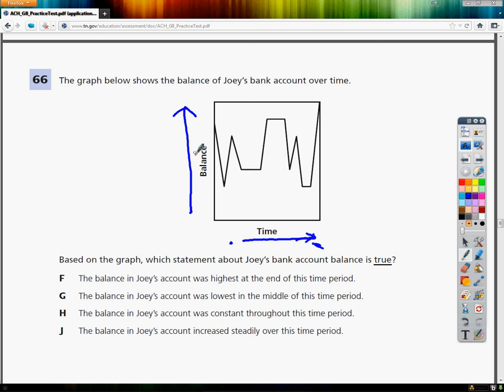We're going to look at the possibilities that were given. F says the balance in Joey's account was highest at the end of the time period. Here's the end of the time period, and it looks like it is the highest amount. We're going to look at the other ones to see, but we'll put this one as our provisional answer.